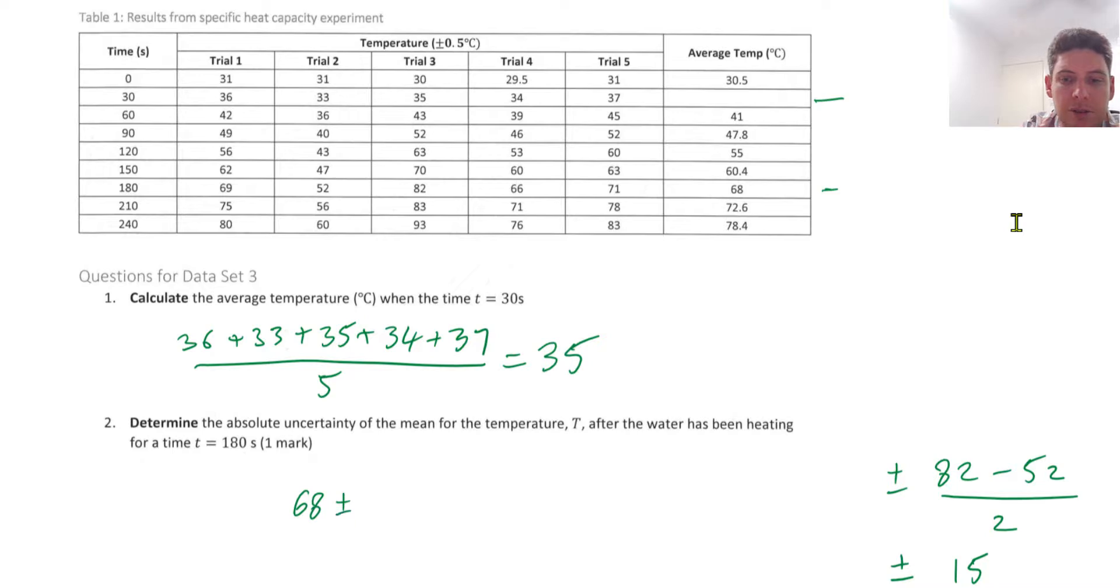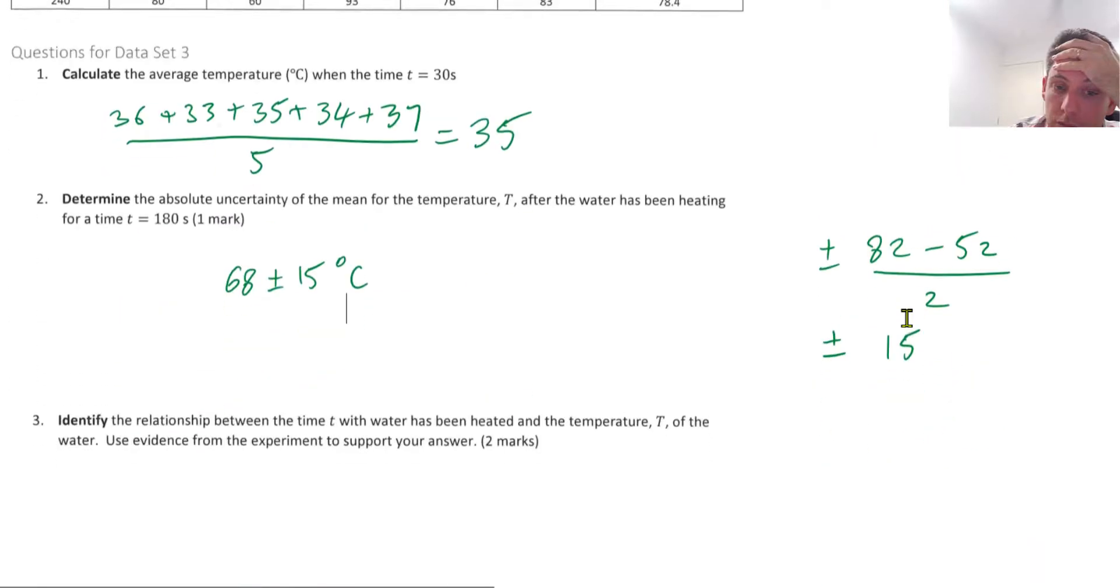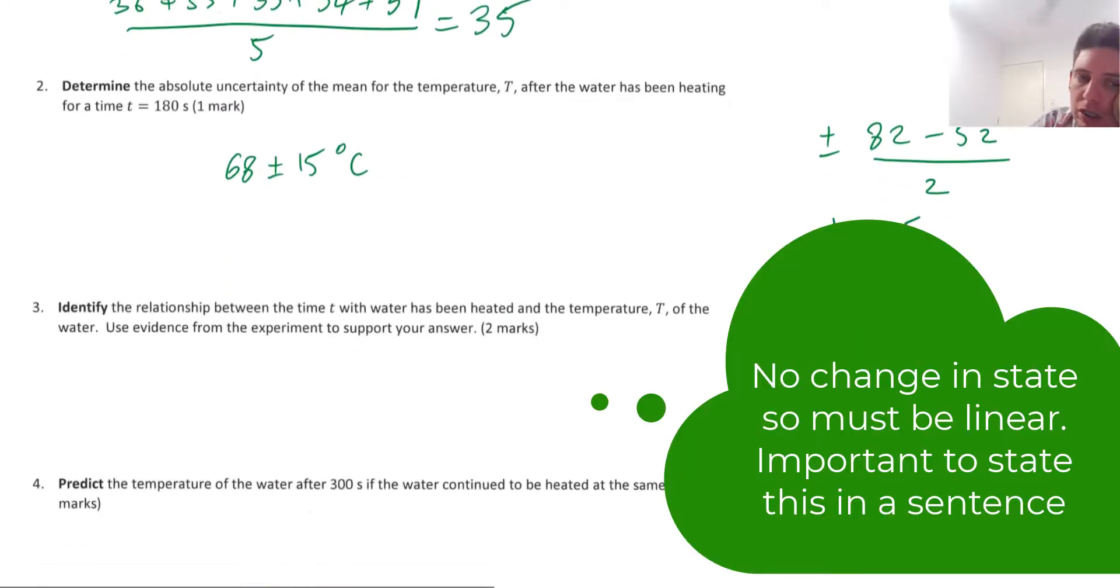Identify the relationship between the time T with water has been heated and the temperature T of the water. Use evidence from the experiment to support your answer. So we can show that this is a linear relationship.